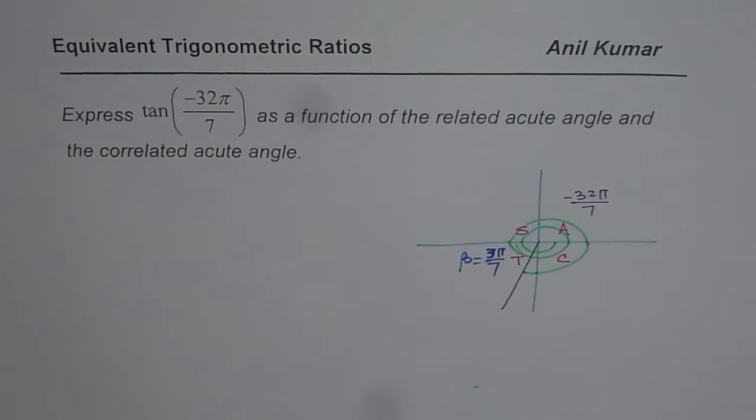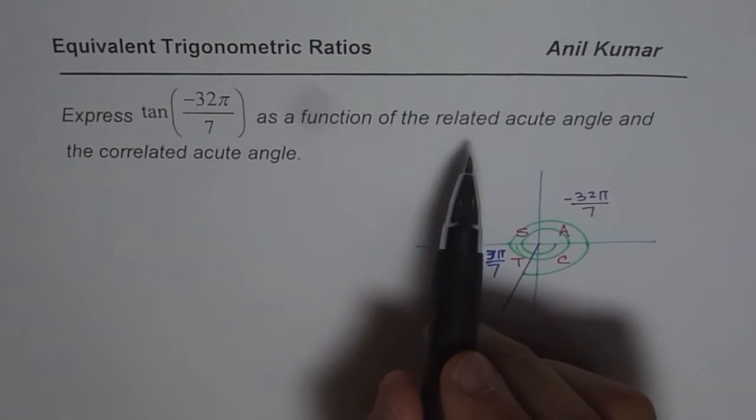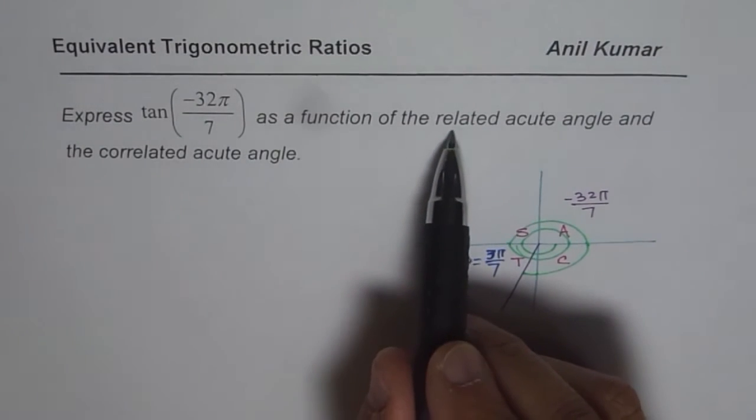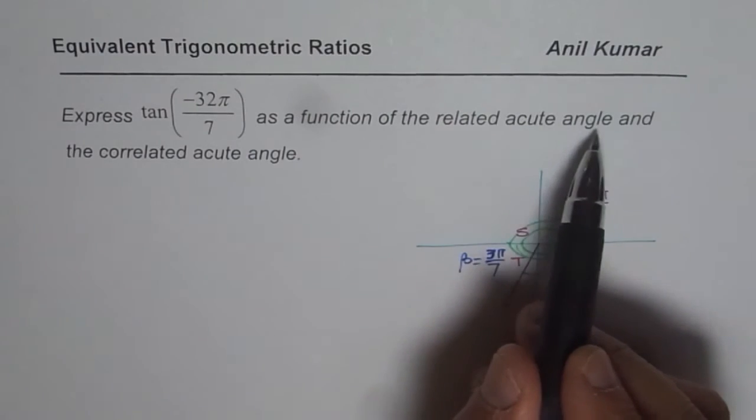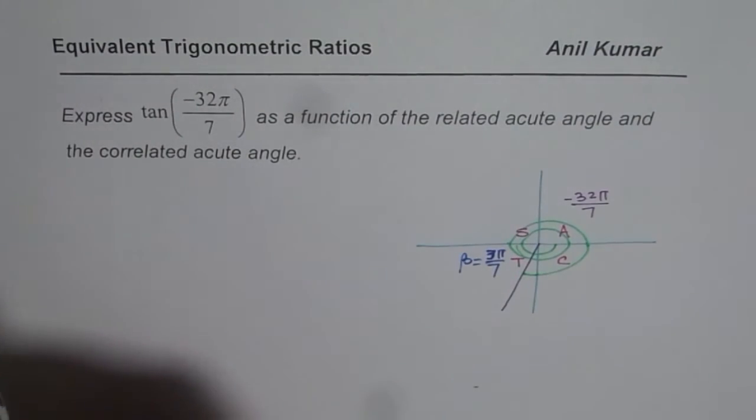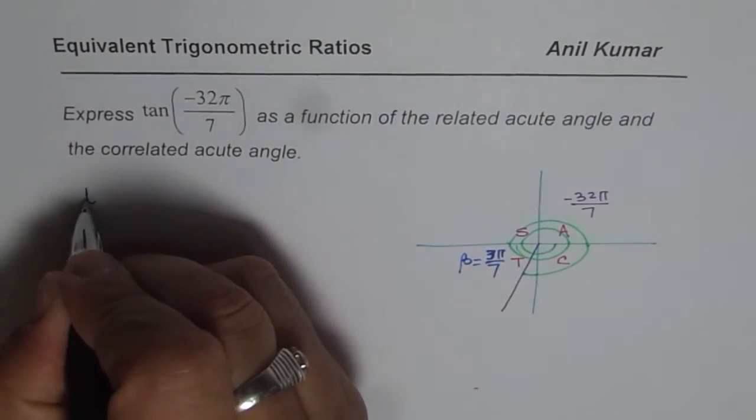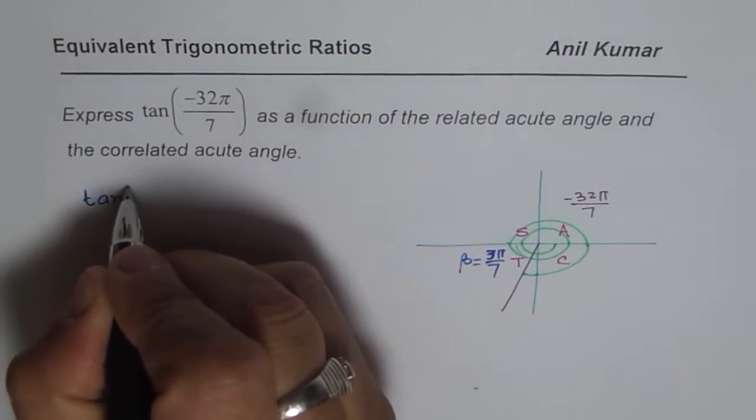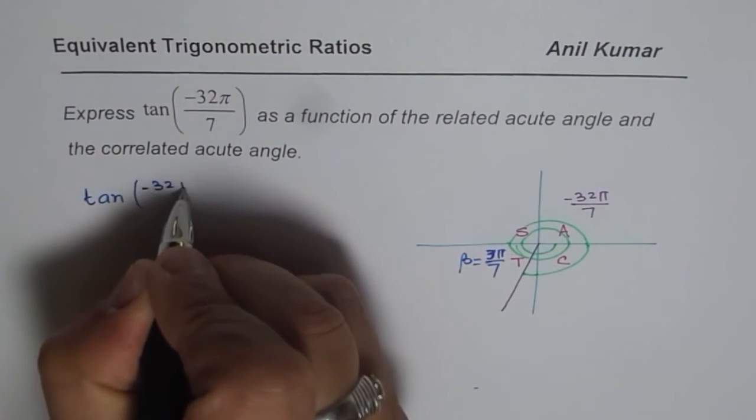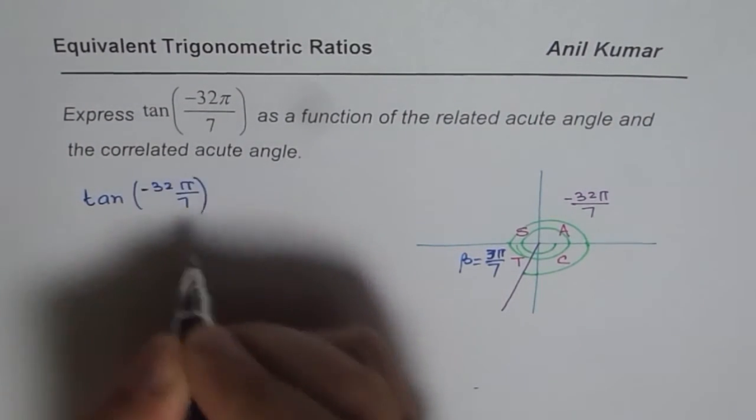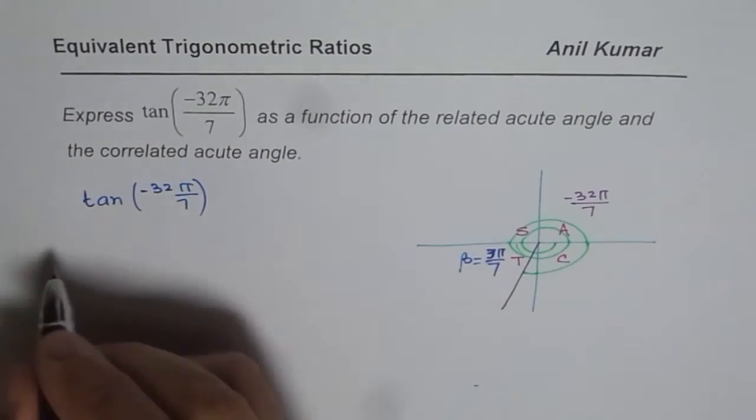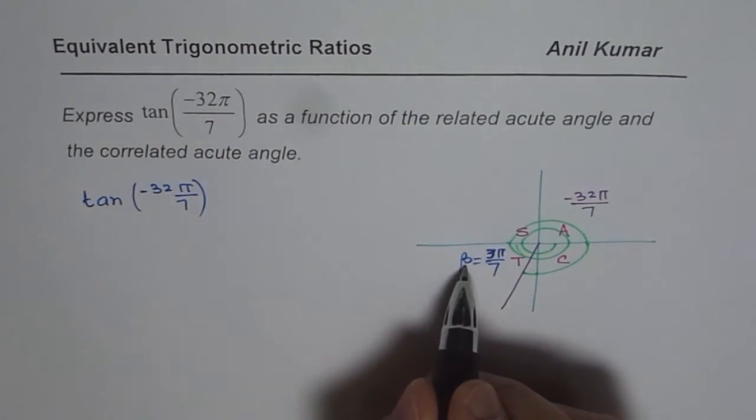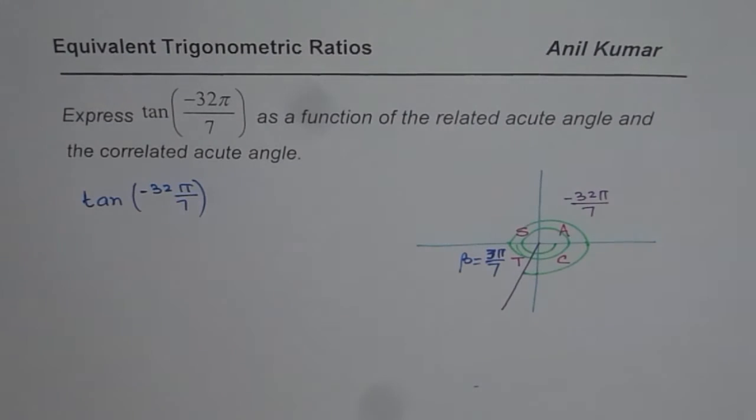Now it is simpler for us to write this trigonometric ratio as an equivalent related angle, acute angle ratio and co-related acute angle. So let us first write down what we need. So we need tan of minus 32π by 7. If I say a related acute angle, that means in terms of β, right? So that is the related acute angle.